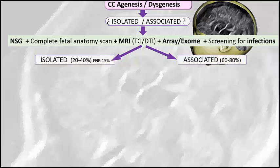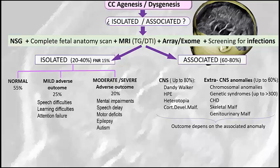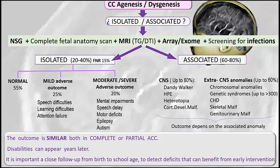When we find corpus callosum anomalies, the main issue is to determine if there is any other associated anomaly, which will be present in about three quarters of cases. If after all complementary studies we cannot find anything else, we can consider it an isolated case. In isolated corpus callosum anomalies, there is almost an 80% chance of a normal outcome or with very mild impairment, but we must inform the parents about the 20% chance of a moderate to severe adverse outcome. The outcome is similar for both incomplete or partial agenesis, and disabilities can appear years later, making close follow-up from birth to school age important.